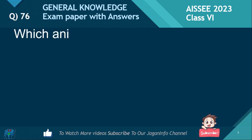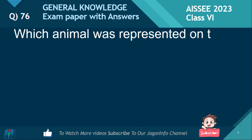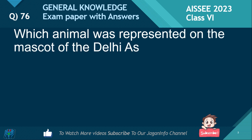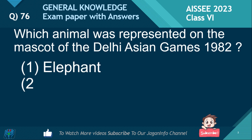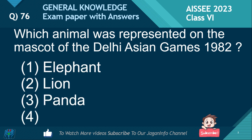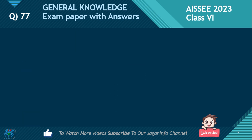Which animal was represented on the mascot of the Delhi Asian Games 1982? Options: Elephant, Lion, Panda, Tiger. If you know the answer, please put the comments below. The answer is Elephant.